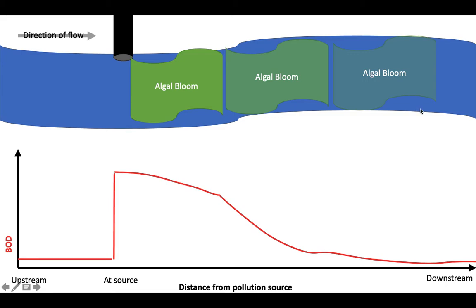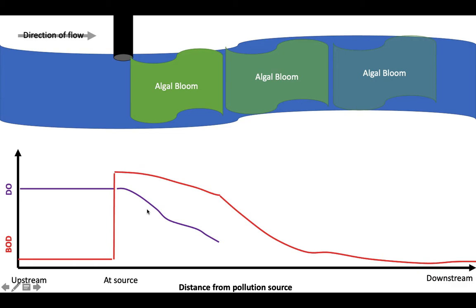Dissolved oxygen has a somewhat opposite relationship to BOD. Upstream, there's low biological oxygen demand, so there's high dissolved oxygen. Once we hit the point source of pollution, BOD increases, and the amount of oxygen in the water drops substantially because of all that decomposition. But as we move further and further from the point source, there's less decomposition and less BOD, so dissolved oxygen will start to bump up again.